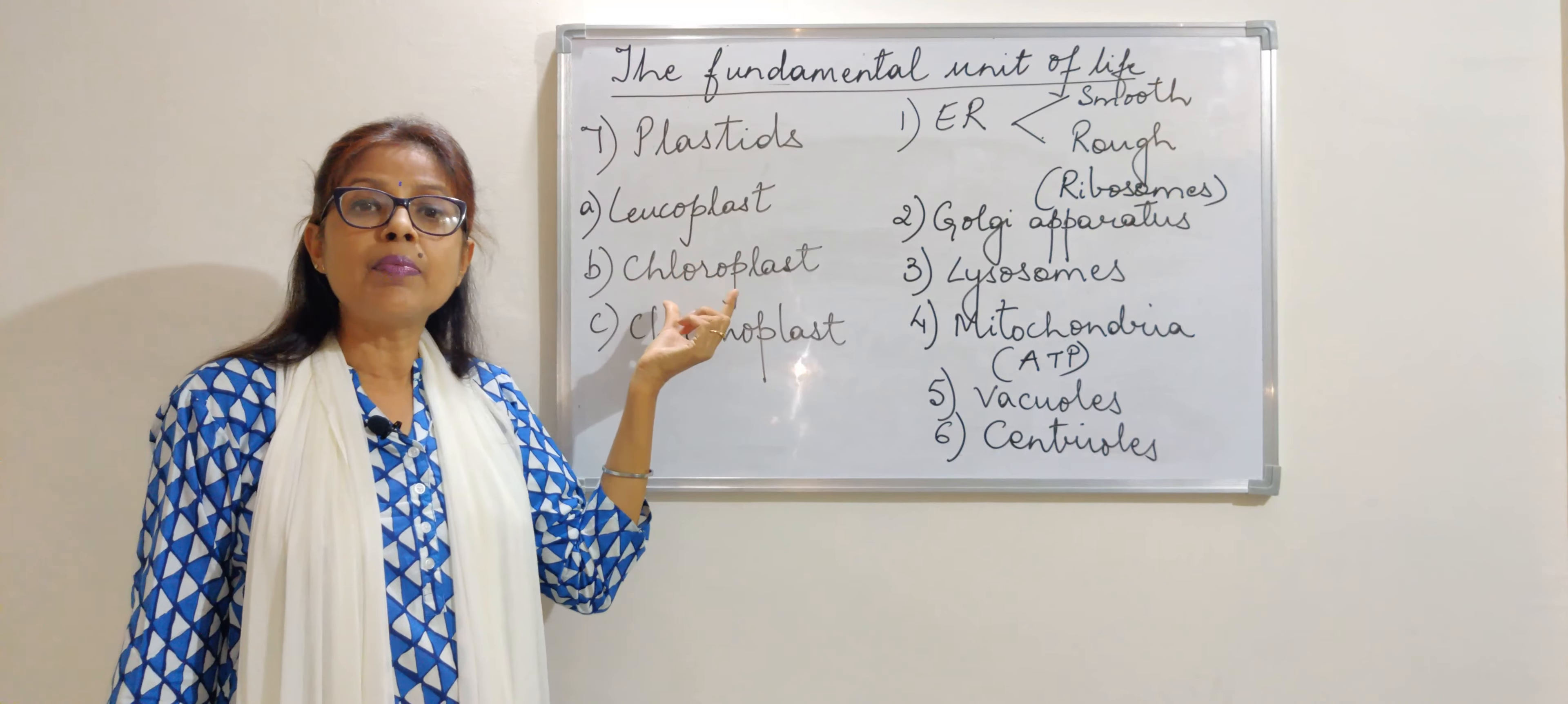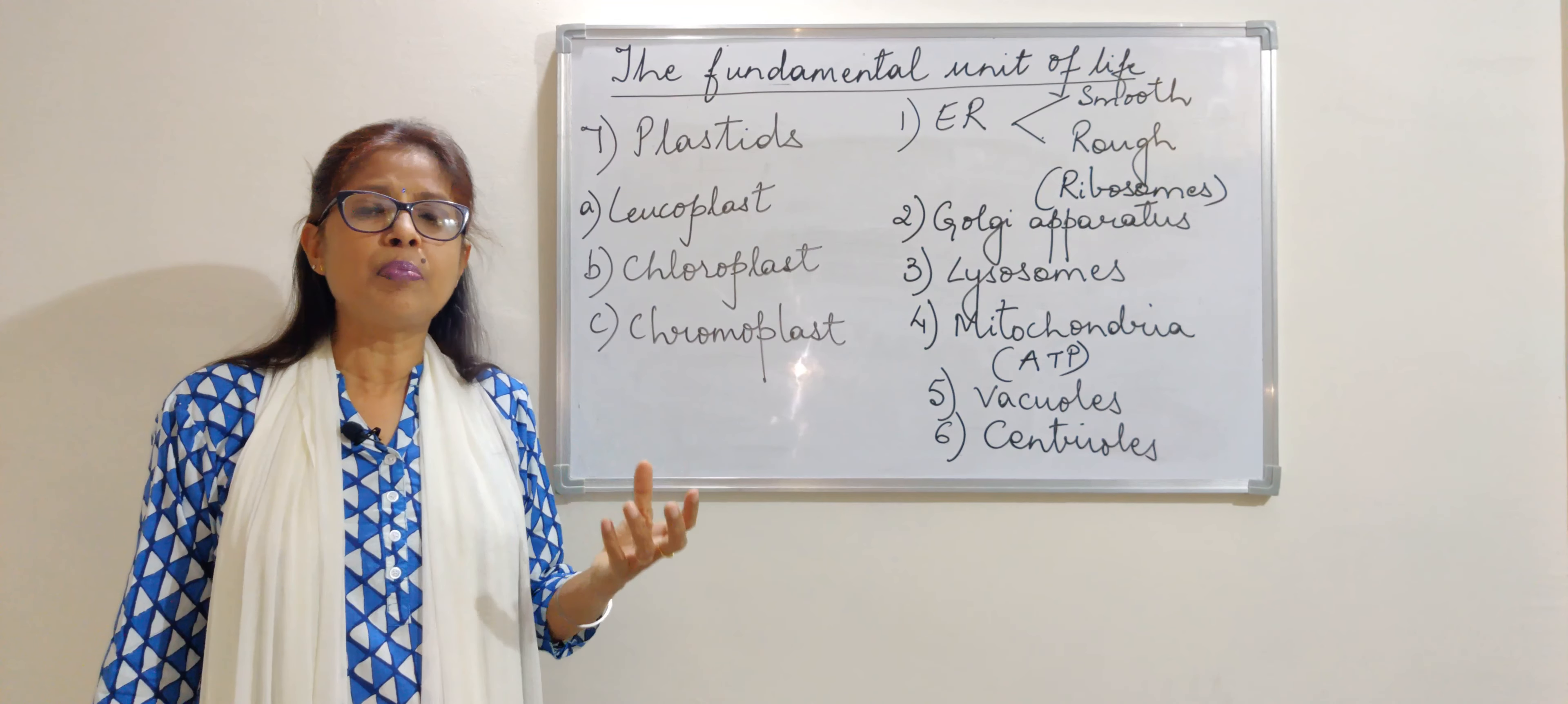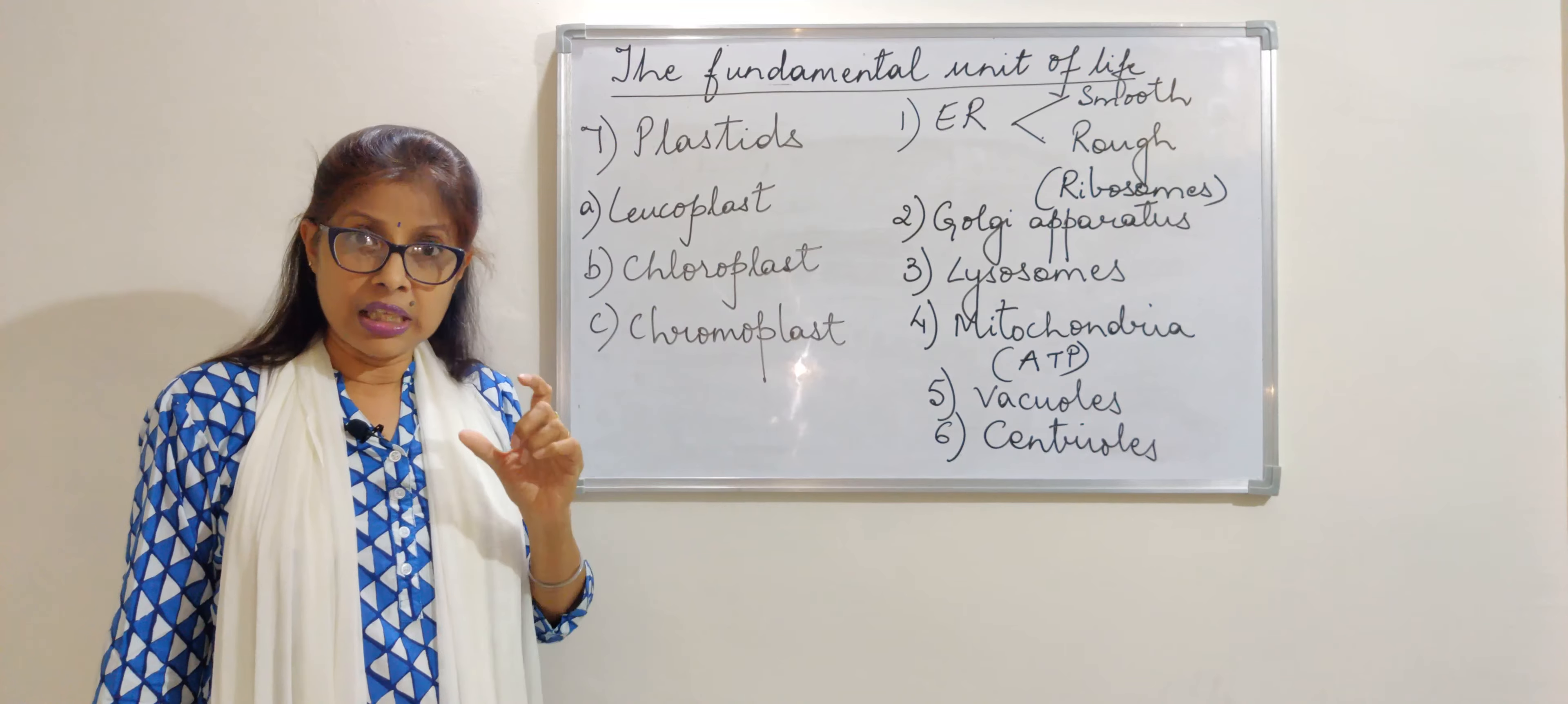The chloroplast, as the name suggests, chloro means related to chlorophyll. And this is present in the green areas of the plants, that is the leaf or the green part of the stem. And it imparts only green color to the leaves.